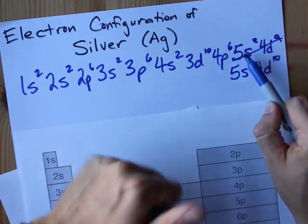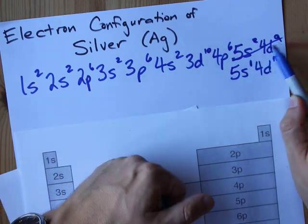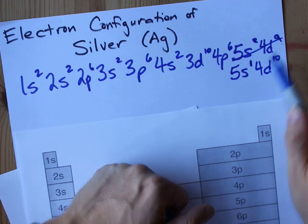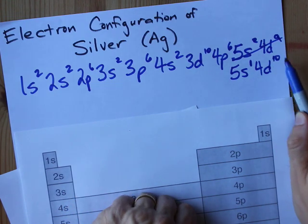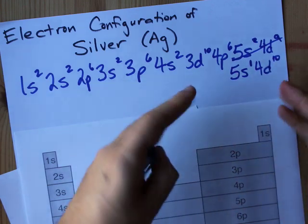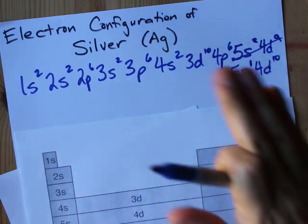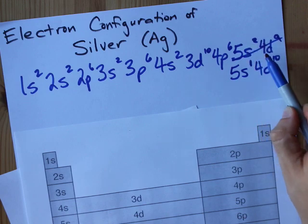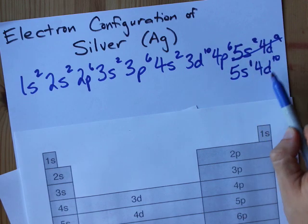Whereas here you had a full s, which is good, and a not half or full d. So to complete the d subshell at a higher energy, you're going to borrow an electron. That promotion is easy. It happens. It's your job to know that s2d9s become s1d10s.